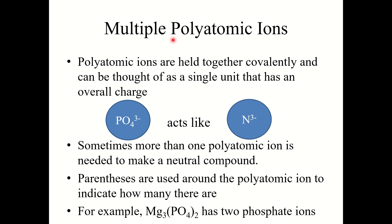Now, a note on multiple polyatomic ions. Polyatomic ions are held together covalently and act as a single unit with an overall charge. For example, PO4³⁻, the phosphate anion, acts just like a monatomic anion. Sometimes more than one polyatomic ion is needed to make a compound neutral. Parentheses are placed around the polyatomic ion to indicate how many there are. For example, Mg3(PO4)2 means there are two phosphate anions.